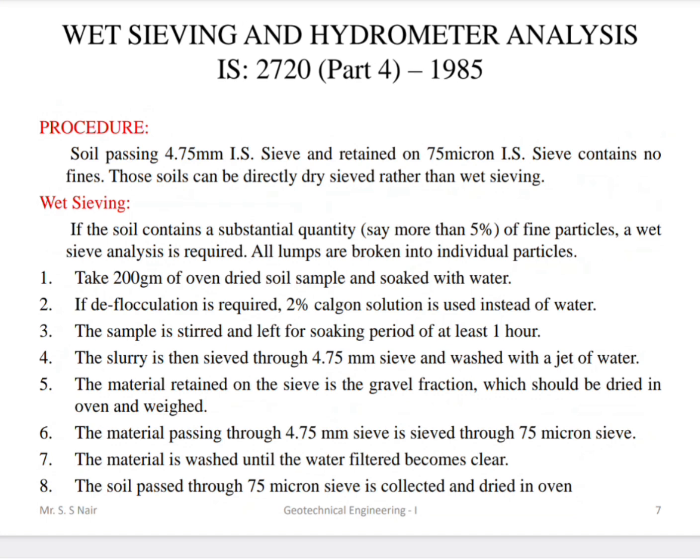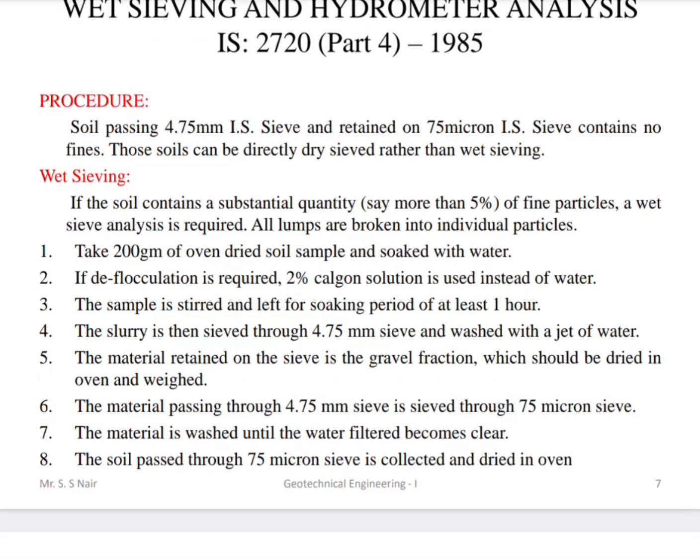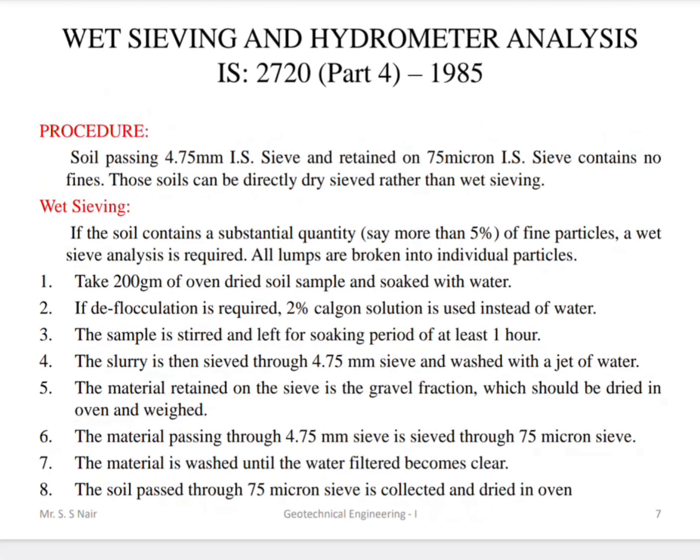The material passing through 4.75 mm that is retained on 75 microns is washed and filtered until the water becomes clear. It is then passed through 75 microns, collected, and dried in the oven.